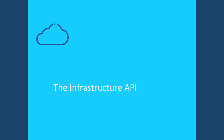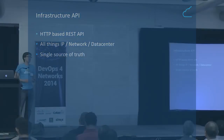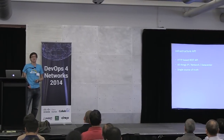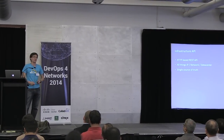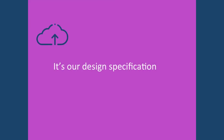Enter the Infrastructure API — not a very creative name, but a very helpful tool. This is what I started working on back in March, and we started using it in production in April or May and have been using it every day since. It is an HTTP-based REST API. It manages all things IP network and data center related, and acts as a single source of truth for our network infrastructure. It's our design specification — that thing we spent so much time developing — but implemented in code.